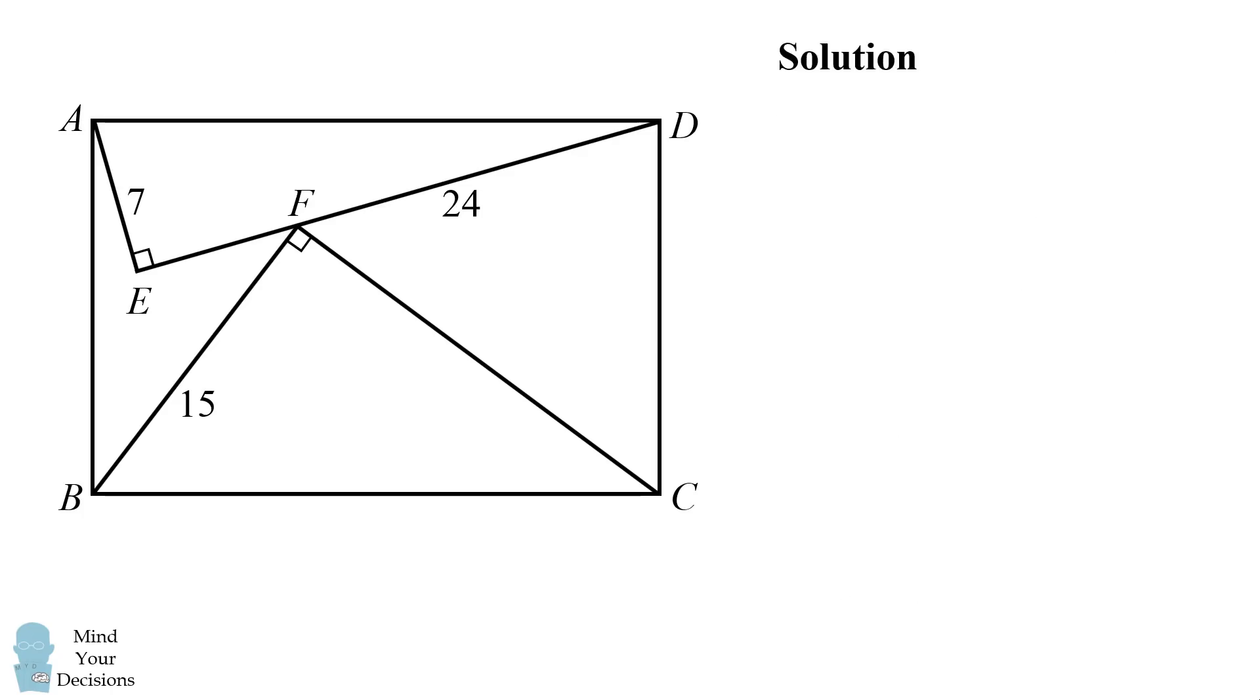The first thing is we'll figure out the length of AD. Since AED is a right triangle, and AD is the hypotenuse, we can solve for its length using the Pythagorean theorem. AD is equal to the square root of the quantity 7 squared plus 24 squared, which simplifies to be 25. You might also remember this, because AED is a special right triangle. If you have legs 7 and 24, the hypotenuse will be 25.